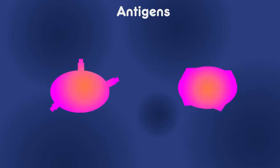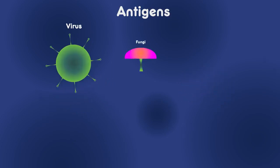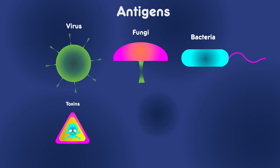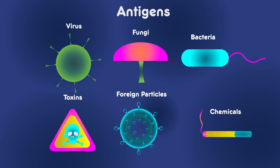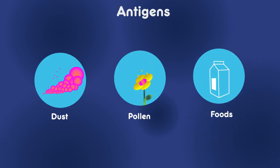Antigens are foreign substances capable of triggering an immune response. They can be viruses, fungi, bacteria, and non-living substances such as toxins, chemicals, and foreign particles. They can even be allergens like dust, pollen, or certain foods that cause allergic reactions.